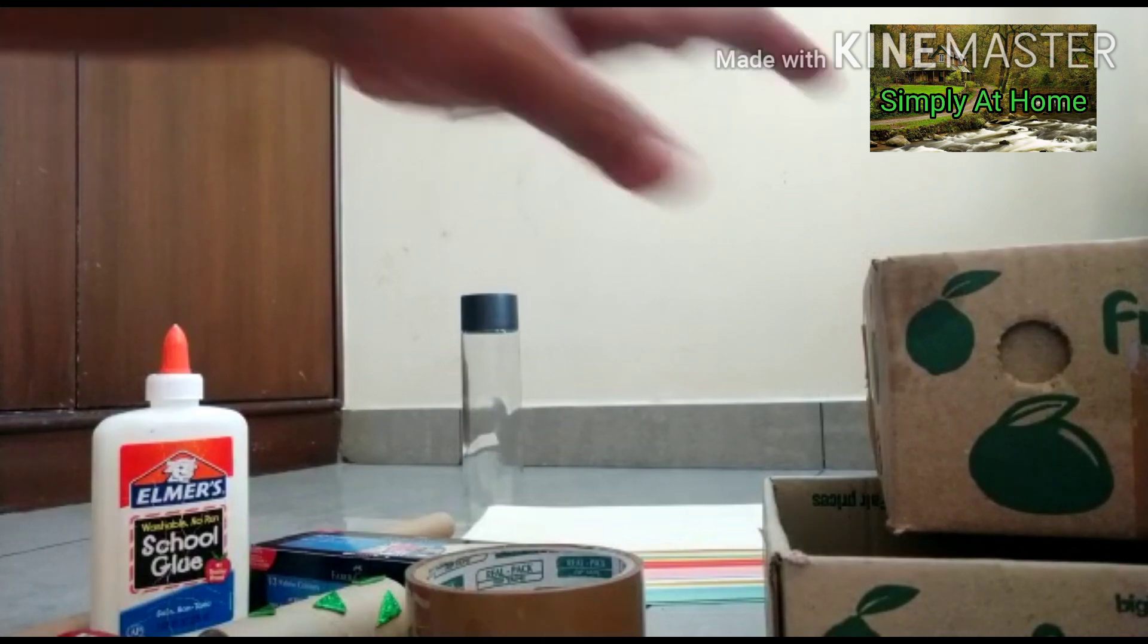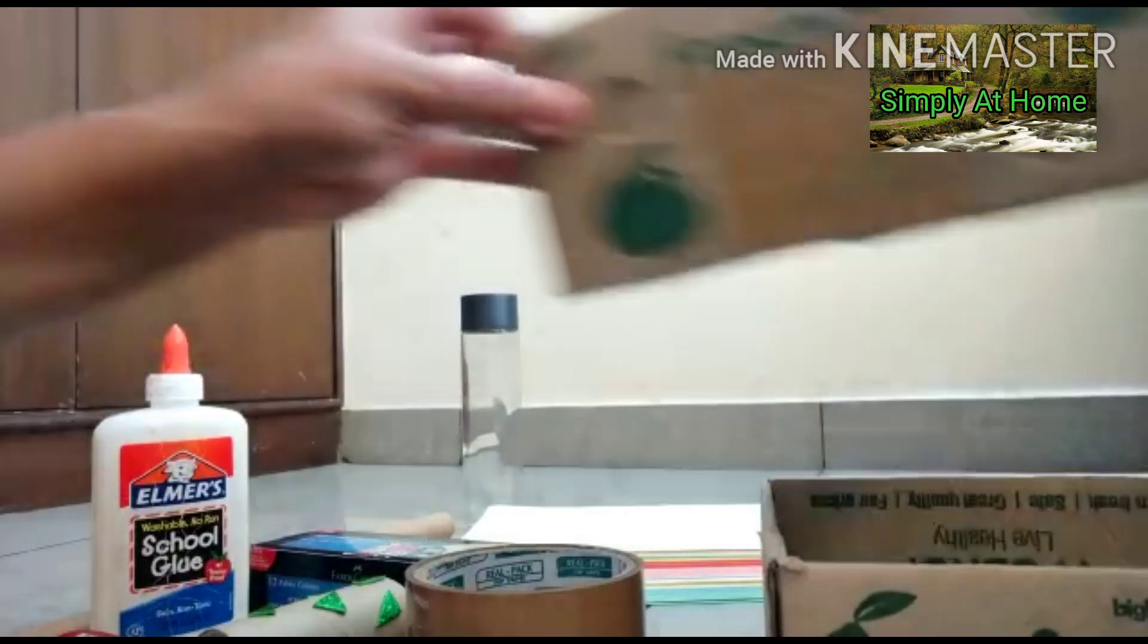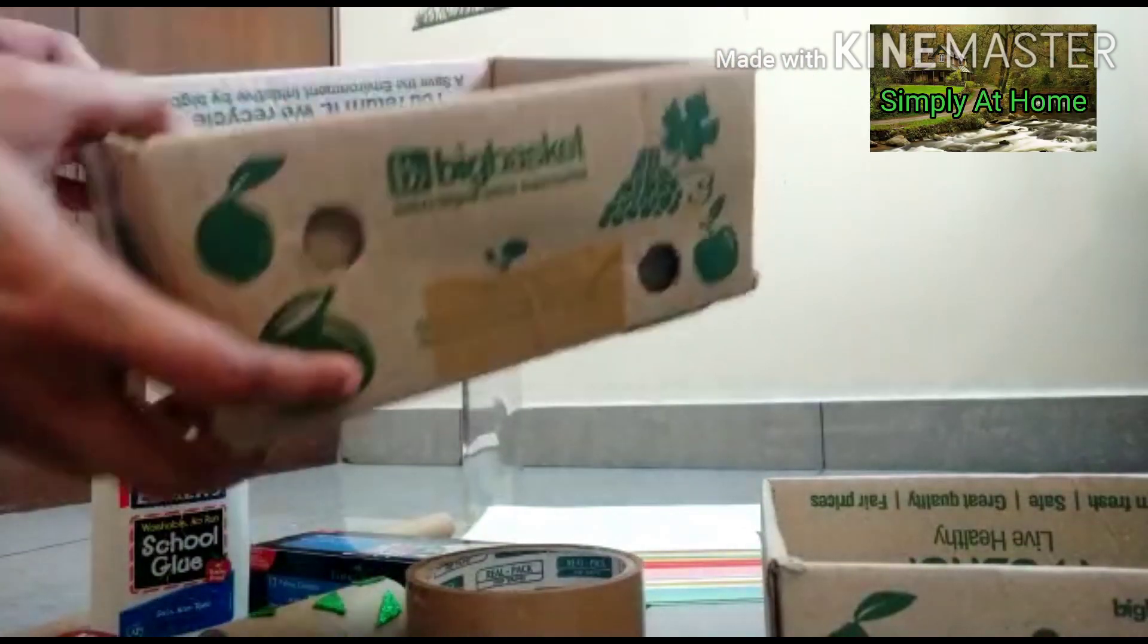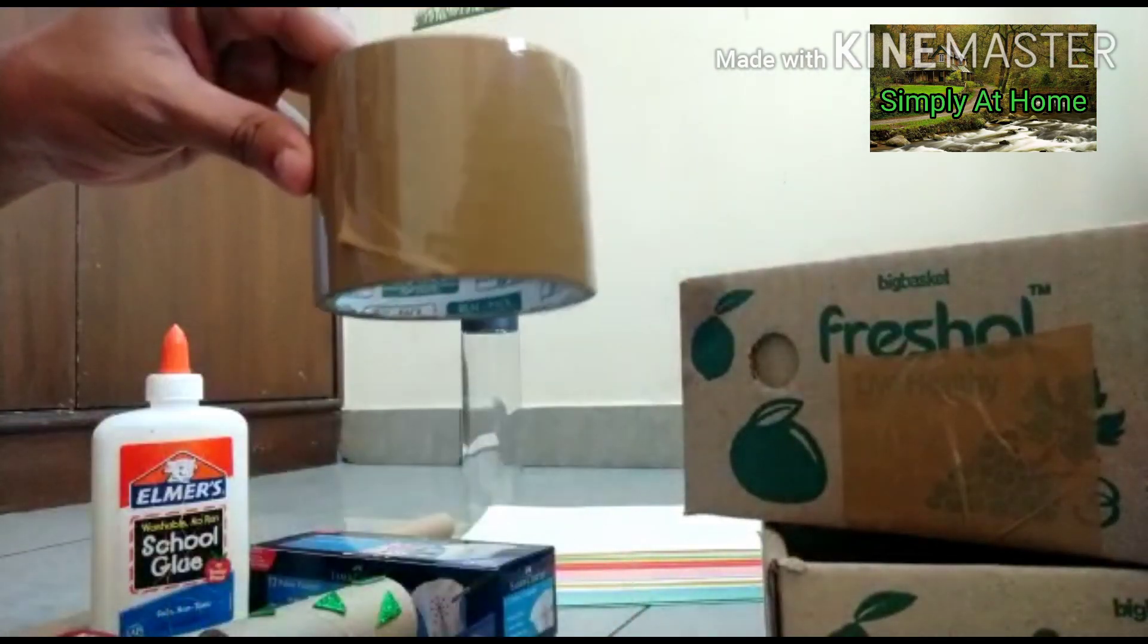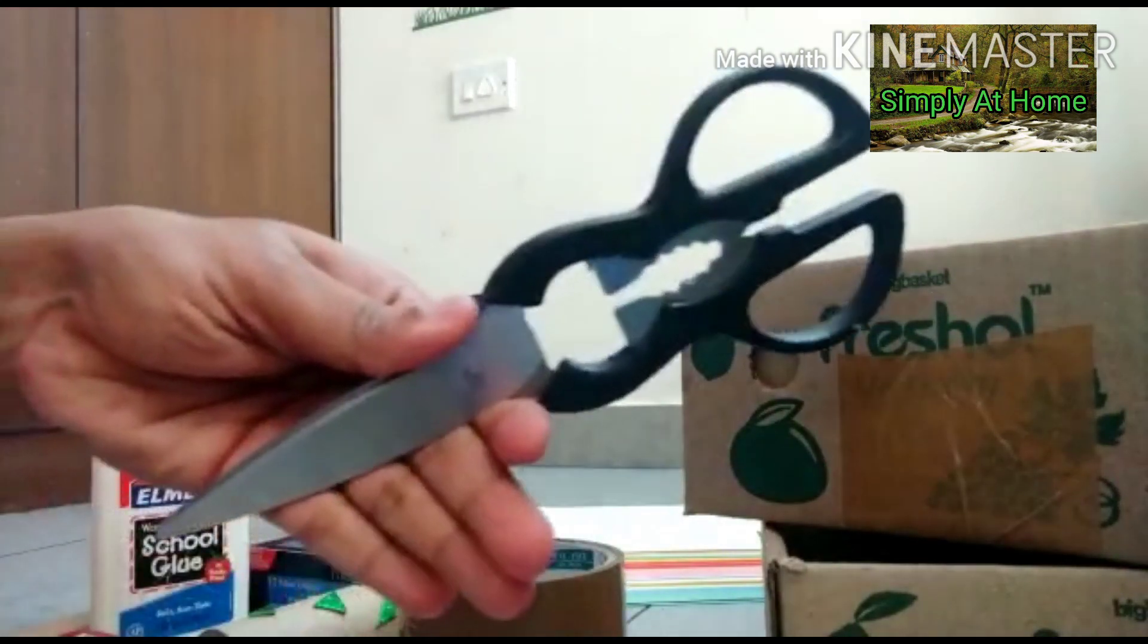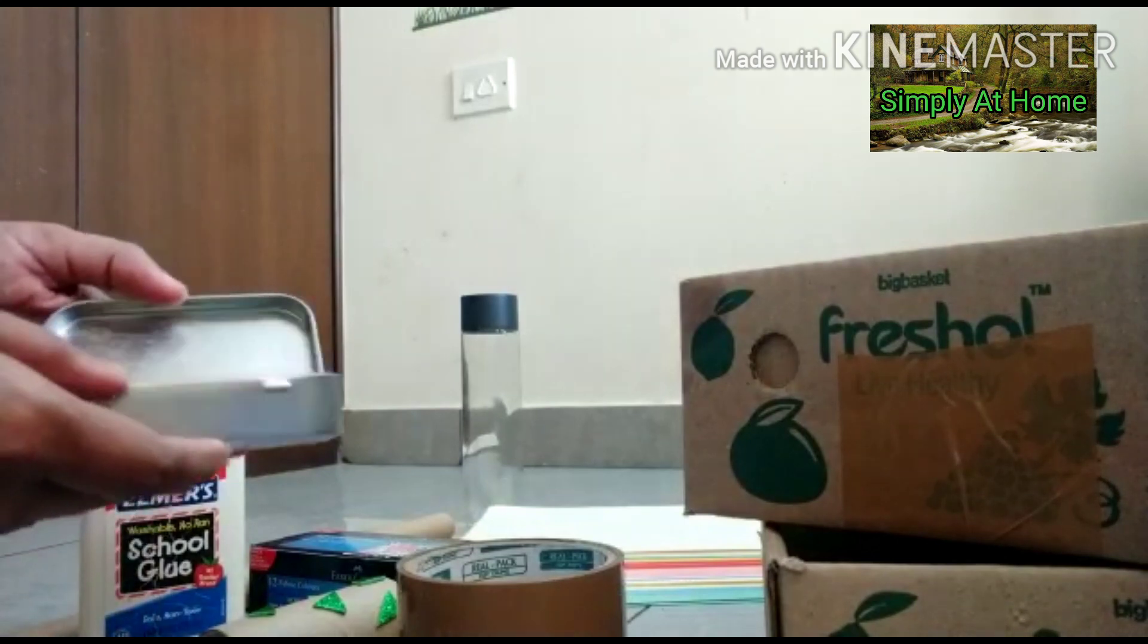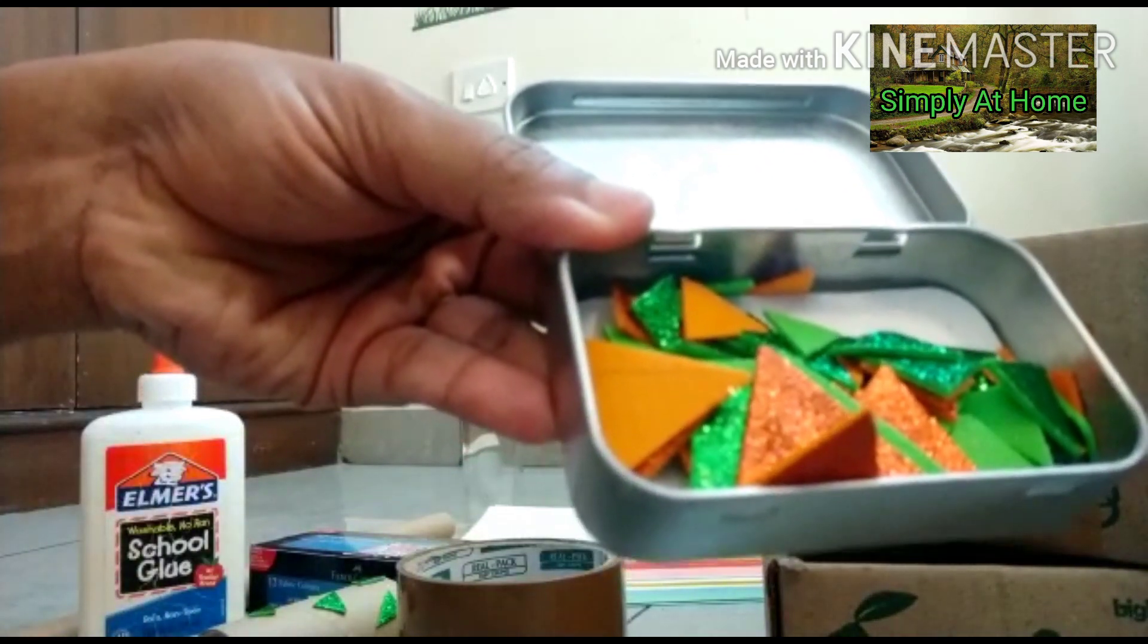So the materials for this project: I have some of these cardboard boxes that came with fruits in them, about six of these. I have two and a half inch tape, scissors, glue, and foam sheets or little foam pieces. I'll tell you what I use them for.